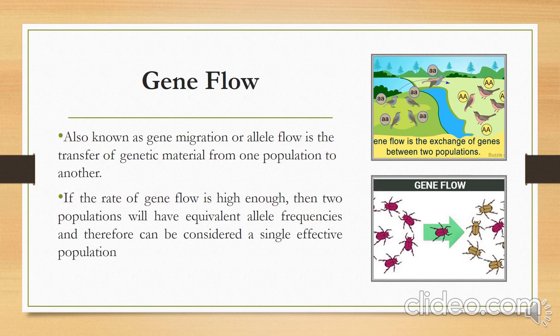Another mechanism of evolution is gene flow, also known as gene migration or allele flow, which is the transfer of genetic material from one population to another. If the rate of gene flow is high enough, two populations will have equivalent allele frequencies and can be considered a single effective population. When this happens, there is a tendency to increase gene diversity in the population.